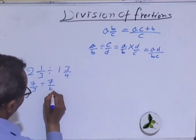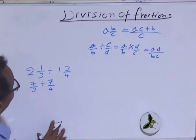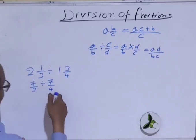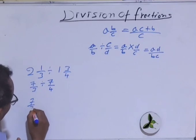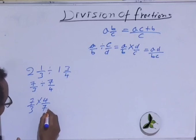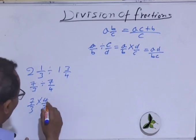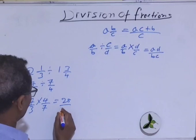This is the improper fraction. Next step is to multiply. So division of fractions is to multiply the first fraction by the reciprocal of the second one. This means 7 over 3 times 4 over 7. Multiply numerator by numerator and denominator by denominator. So it will give us 28 over 21.